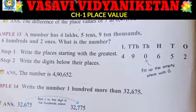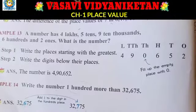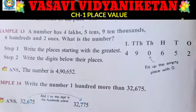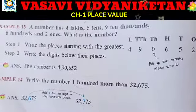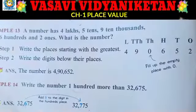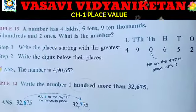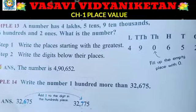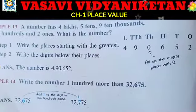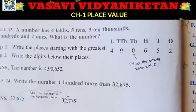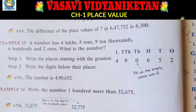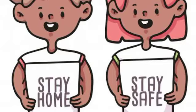Example 14: write the number 100 more than 32,675. We have 32,675 and we need to add 100, so we add 1 to the digit in the hundreds place. I hope you all understood today's topic. I will make another video for the remaining chapter. Until then, children, keep smiling, stay home, stay safe — see you!